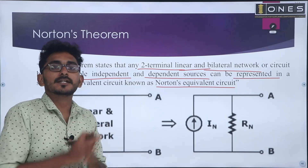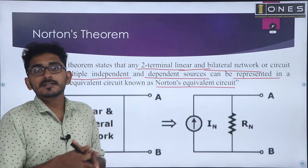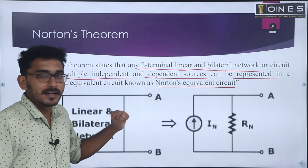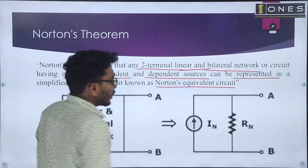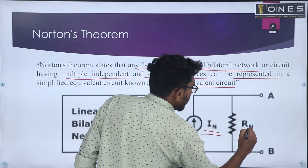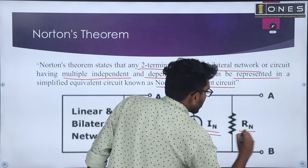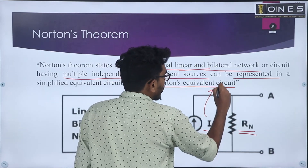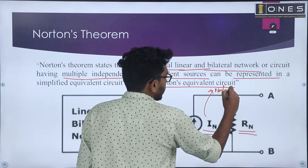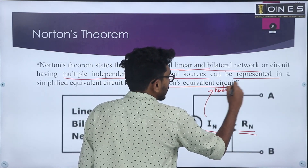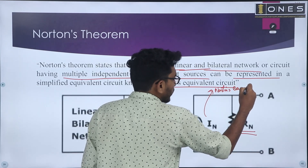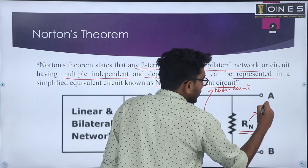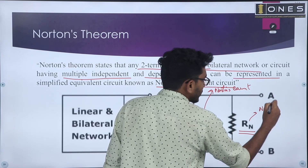That simplifies to one equivalent circuit to represent. The equivalent circuit includes elements: one current source, which will be in parallel with the resistance. And this current is called as the Norton's current.